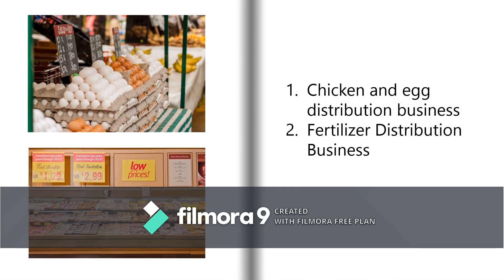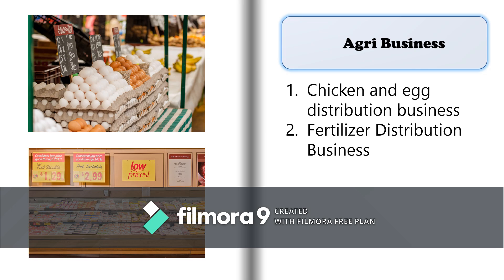As you can see here, we have eggs and different products with prices — chicken and egg distribution business, fertilizer distribution business. This is called agri-business. Other examples include vegetable farming, mushroom farming, transportation business for farmers, livestock, house construction, poultry equipment manufacturing, chicken and egg distribution, agriculture consulting, fish farming, and florist businesses. All of these are examples of agri-business.